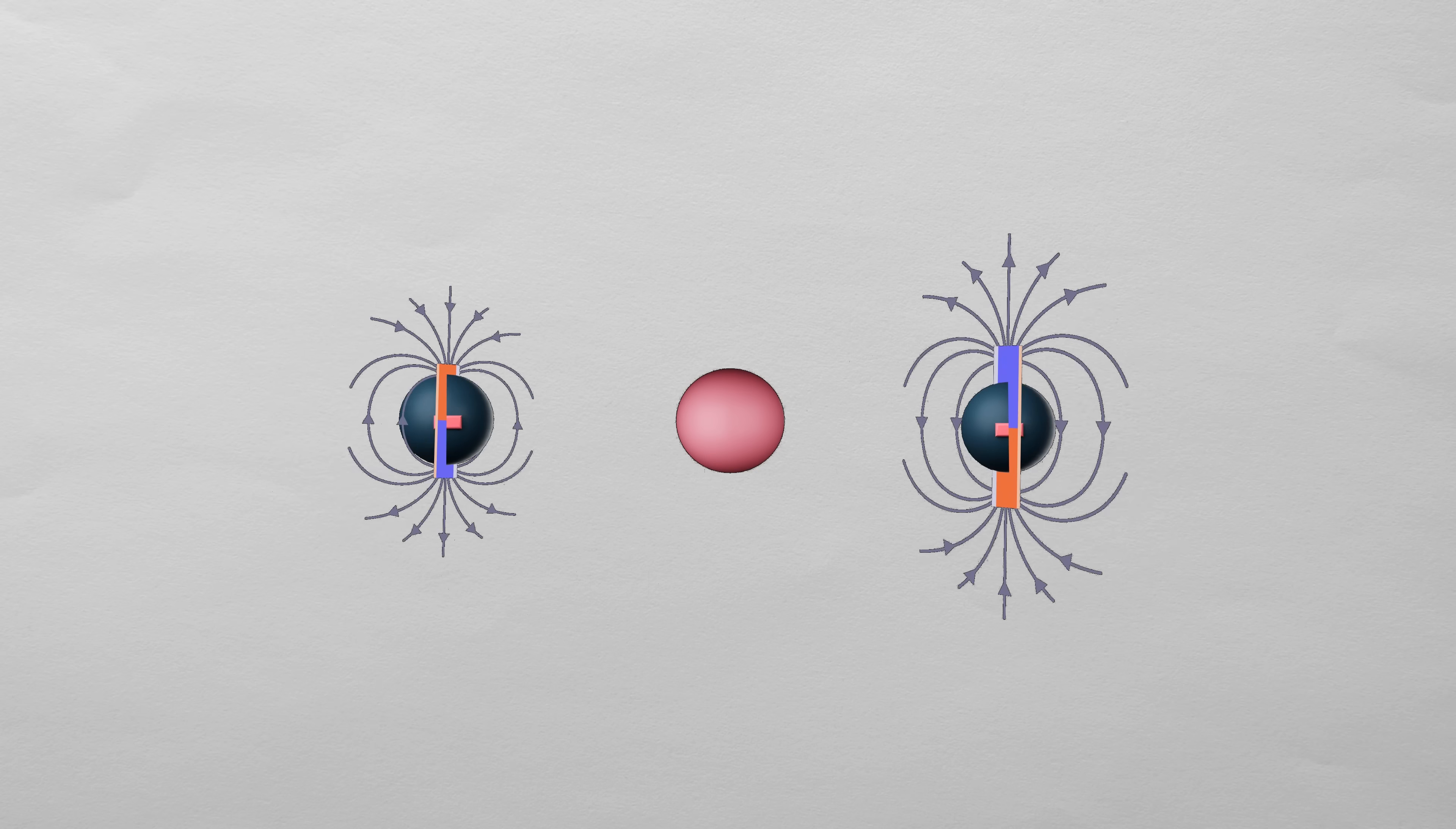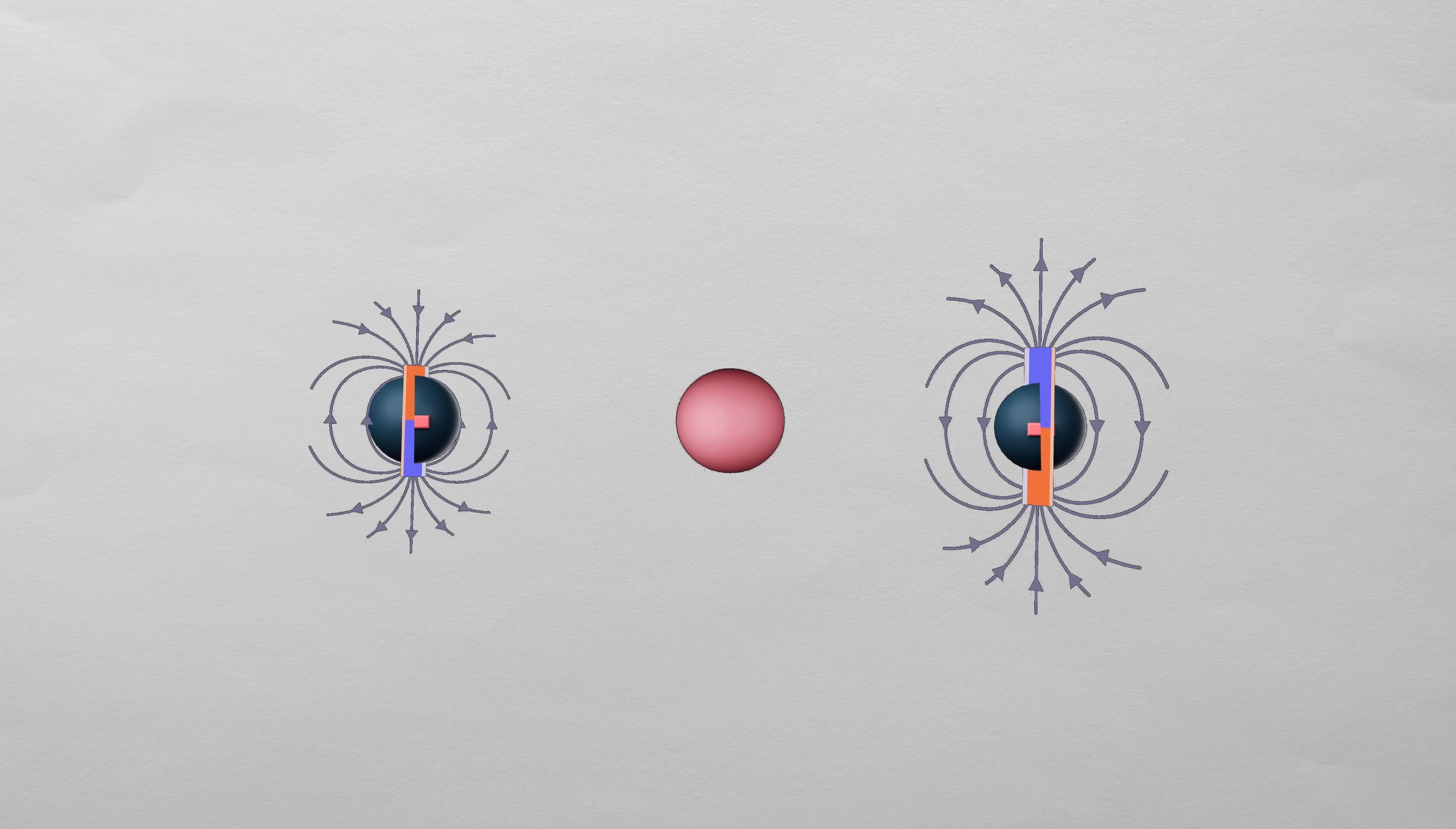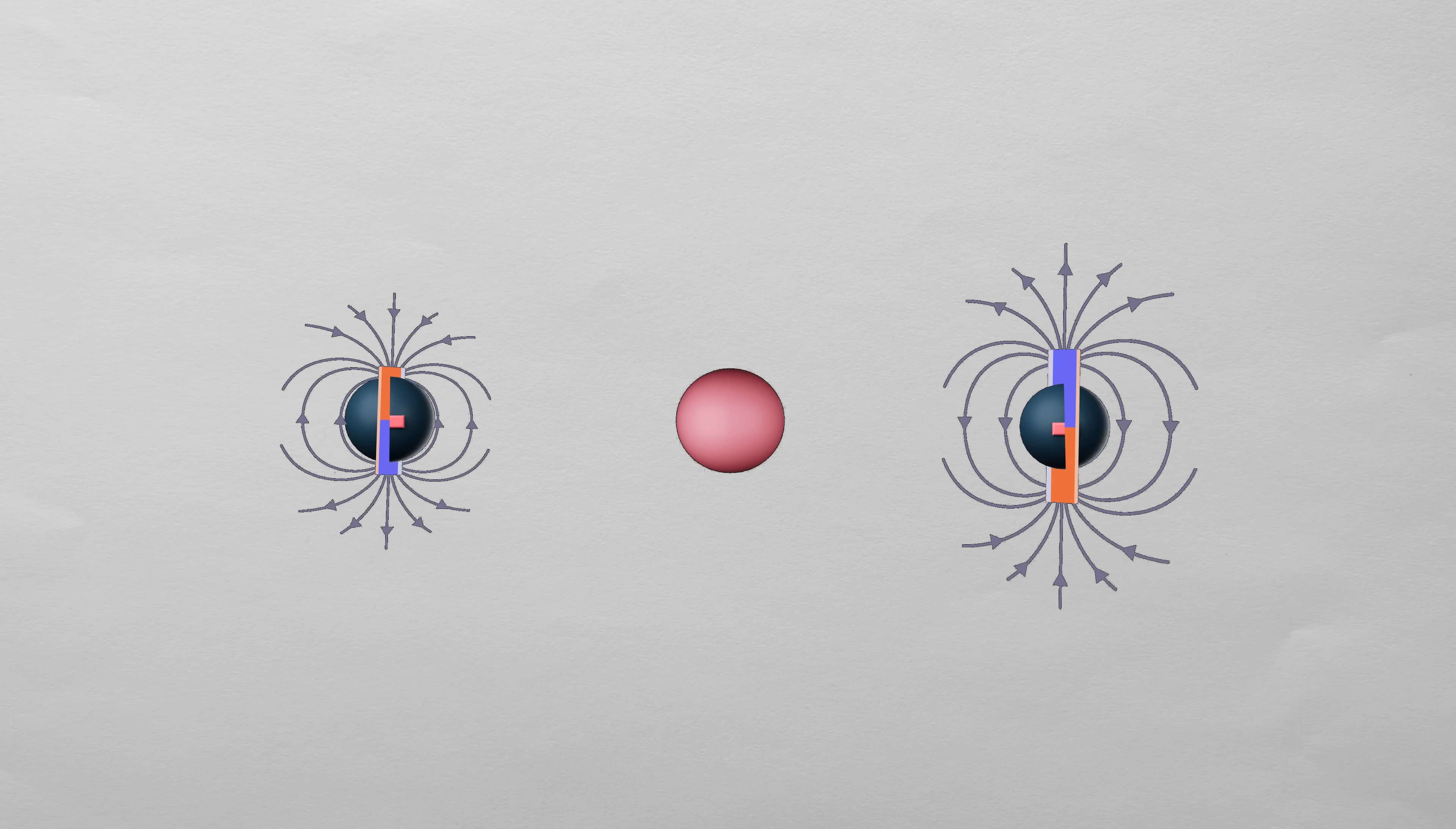Their momenta cancel out, meaning there's no net orbital motion of charges, and their spins cancel as well, so there's no net magnetic field. This is why atoms with completely filled orbitals have no net magnetic field.